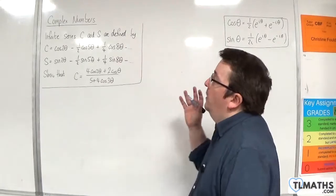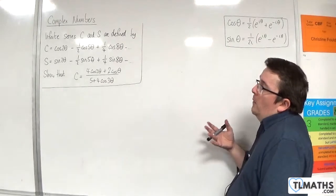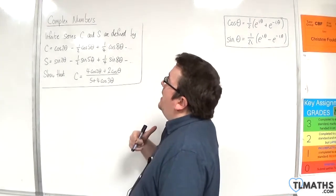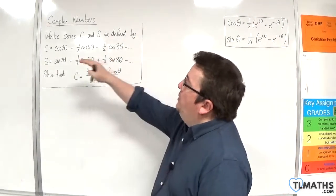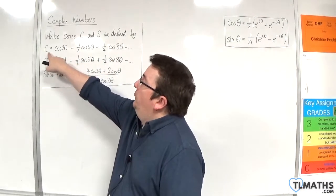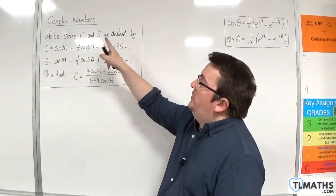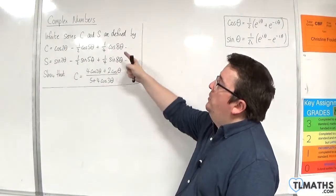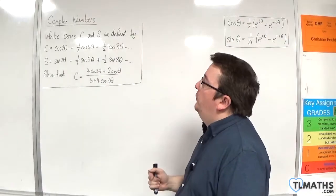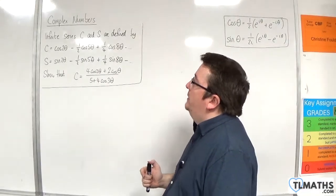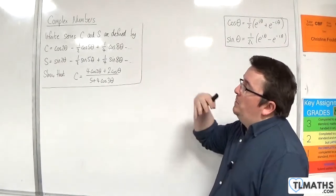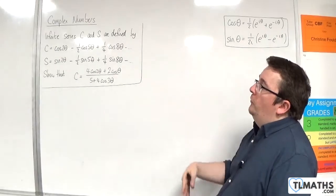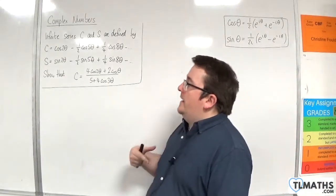In this video, I want to work through this problem where we have infinite series C and S, defined by: C is cosine of 2θ, take away one-half of cosine 5θ, plus one-quarter of cosine 8θ, take away one-eighth cosine of 11θ, etc.